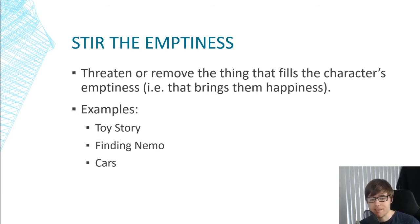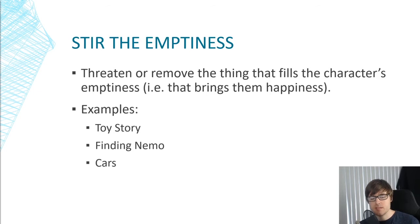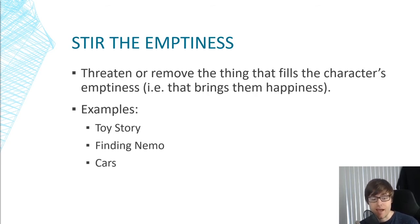In Toy Story, Woody wants to maintain his position as top toy — his position as a favorite toy and his relationship with Andy. He needs to learn to share Andy's love with the other toys. The way we stir Woody into action is by threatening his relationship with Andy — by introducing Buzz, potentially removing him as the top toy. In Finding Nemo, what Marlin loves most is Nemo, so we threaten that by kidnapping Nemo, stirring Marlin into action to go after him. These are the things that create plot — Woody tries to get rid of Buzz; Marlin tries to find Nemo.